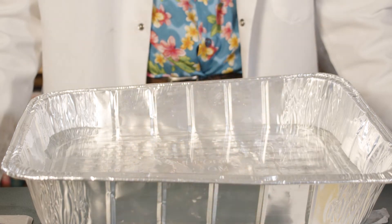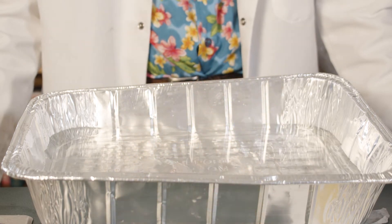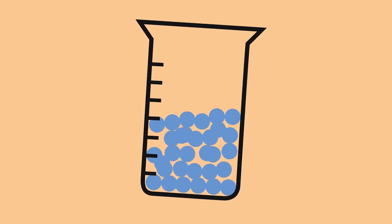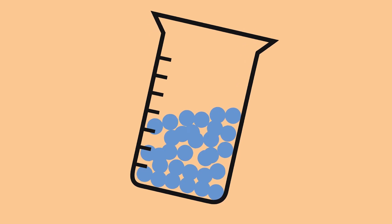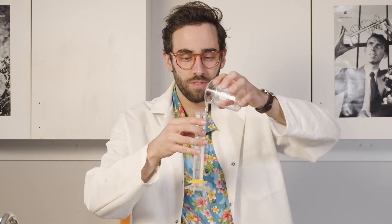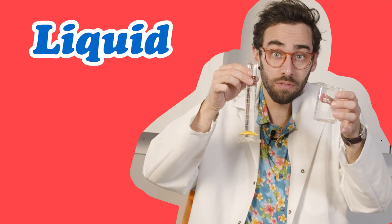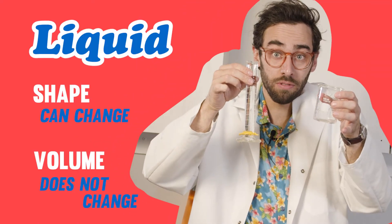Alright, so now we have this water. It has a definite volume, but it can change shape. If I pour it from this beaker into this one — see, it changed shape. Should I be taking notes on this?